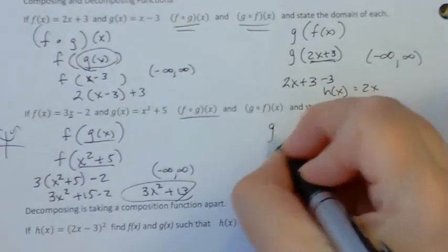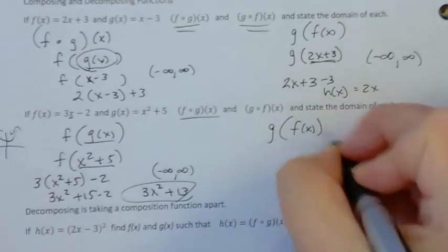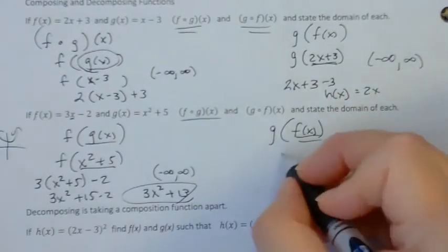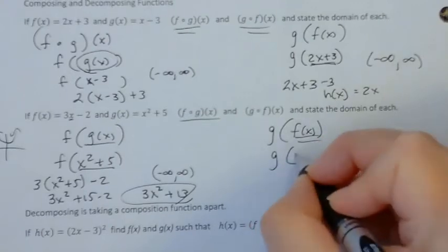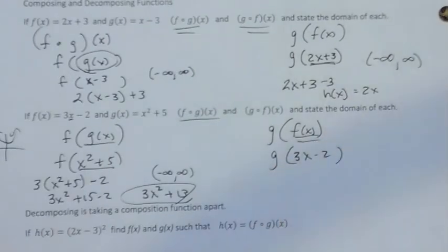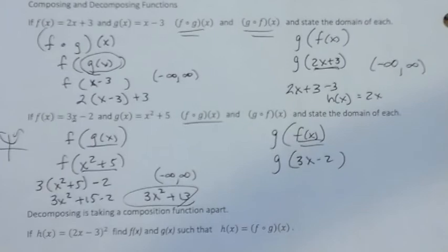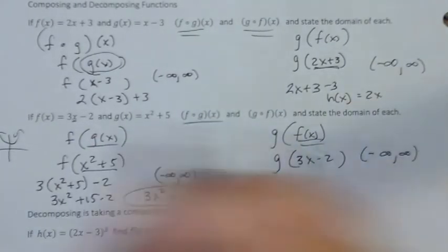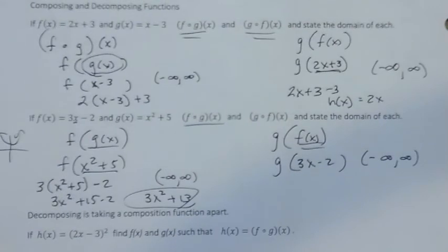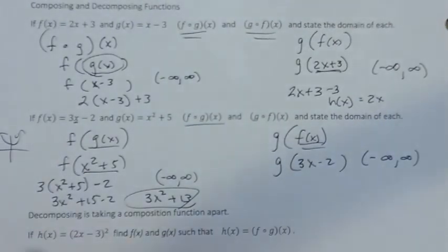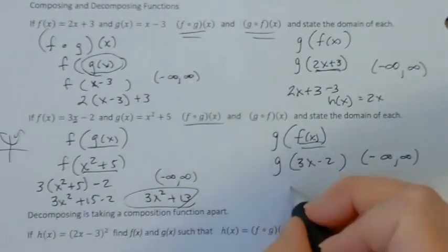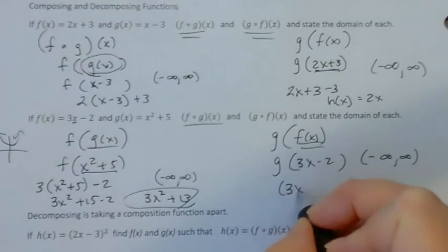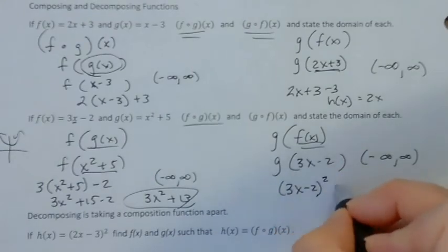Let's find g of f. So f is the inner function. So I'm going to put 3x minus 2 into the g function. Notice 3x minus 2 is linear, so my domain is going to be negative infinity to infinity. And I'm going to put 3x minus 2 in place of x in the g function. So I'm going to have (3x minus 2) squared plus 5.